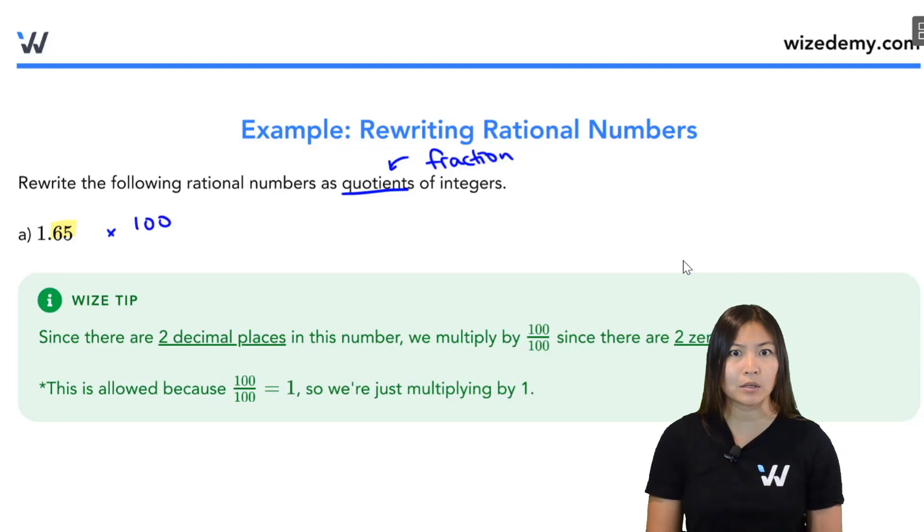So a lot of students get confused here. They're like, how did you pick 100, Jess? Well, there are two decimal places, so I need two zeros. So that's 100. Now, obviously, I can't just multiply by 100, then I'm changing the question. So I'm going to multiply by 100 divided by 100.